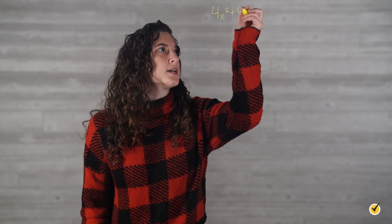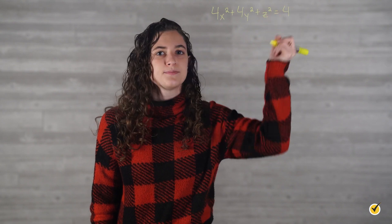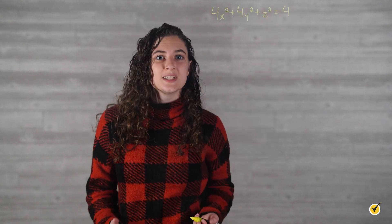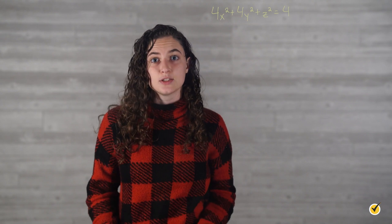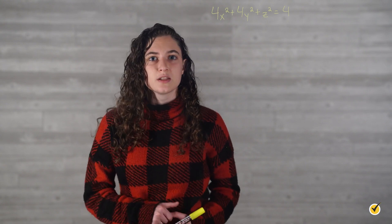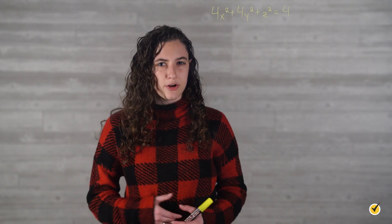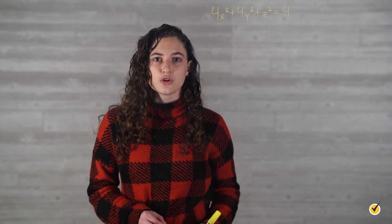Let's find the volume of this shape now. The equation of this ellipsoid is 4x² plus 4y² plus z² equals 4. Since we are going to cut slices perpendicular to the z-axis, we need to write a function of the cross-sectional area in terms of z. Notice that our slices perpendicular to the z-axis will be circular in shape. The area of a circle is equal to pi times the radius squared.